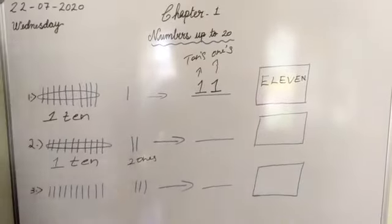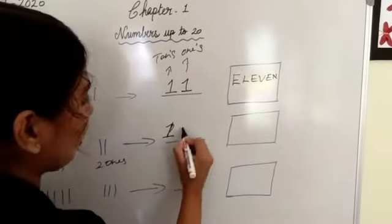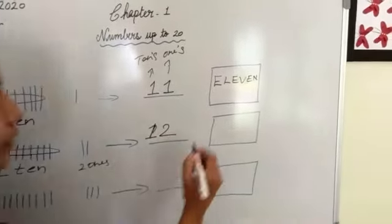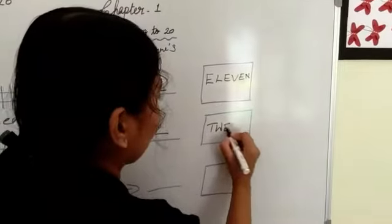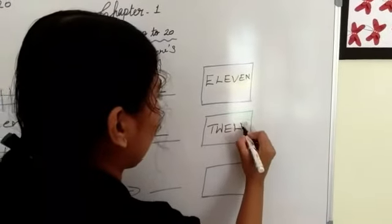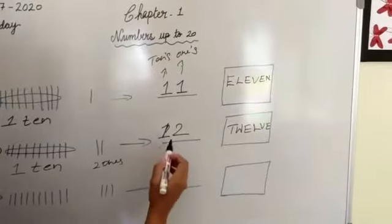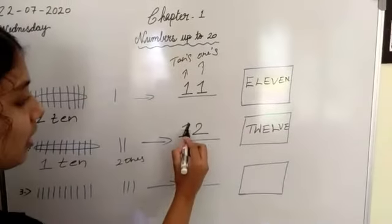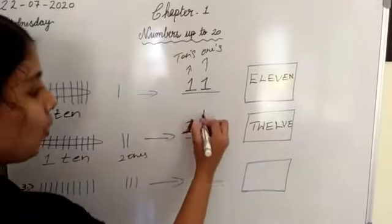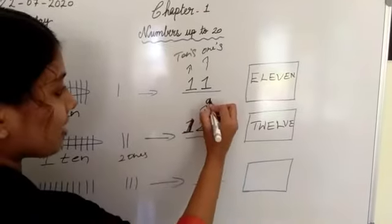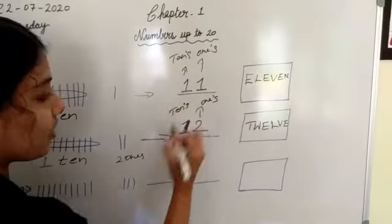Then how many sticks are left? 1, 2 — which means 2 ones. So we will get the number 12. Write the number name of 12: twelve. In this number 2 is in the ones place and 1 is in the tens place.